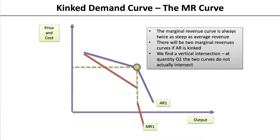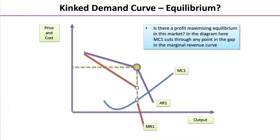We have to bear in mind that the two curves don't actually intersect. We can ask the question: is there an equilibrium? In the diagram, the marginal cost curve cuts through any point in the gap in the marginal revenue curve.